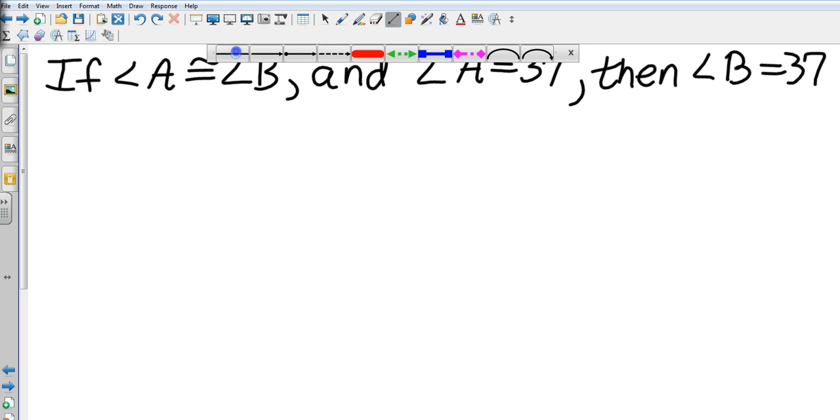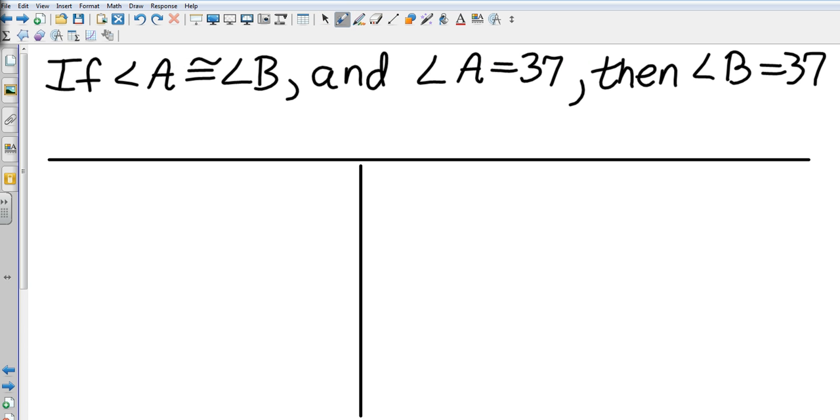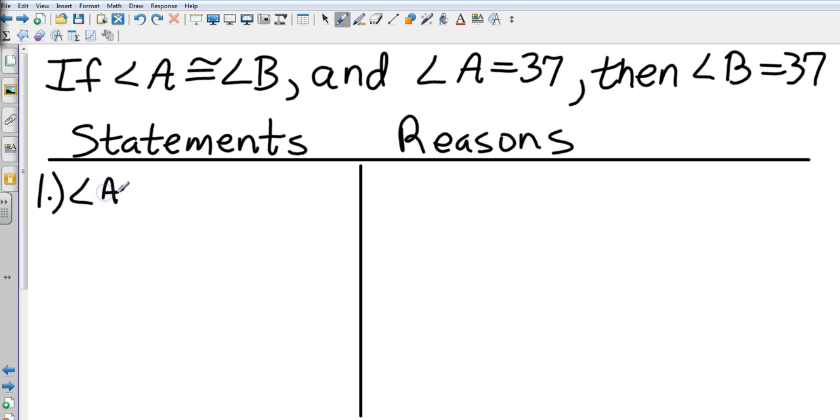So two-column proof. I have statements and reasons. First statement is: angle A is congruent to angle B, and angle A is congruent to 37. That is given.